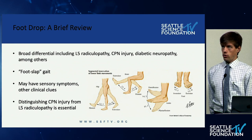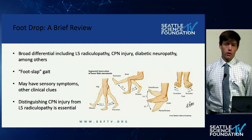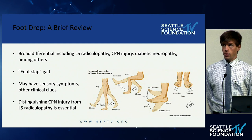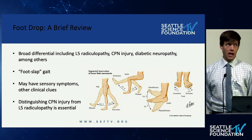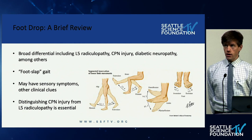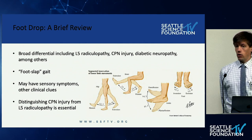These two cases are a good illustration of the broad differential that exists within foot drop as a complaint. Common causes include L5 radiculopathy, common peroneal nerve injury, diabetic neuropathy, and sciatic neuropathy, among many others. It classically presents with a foot slap gait and patients may also have sensory symptoms or other clinical clues. An important distinction is common peroneal neuropathy versus L5 radiculopathy, because management can be dramatically different.